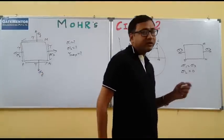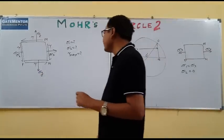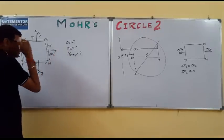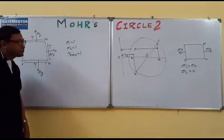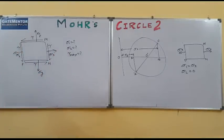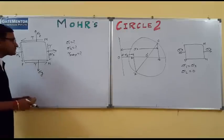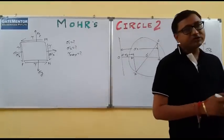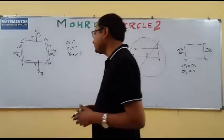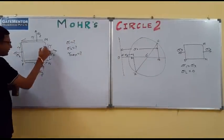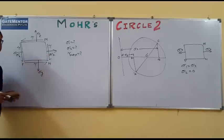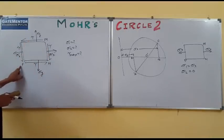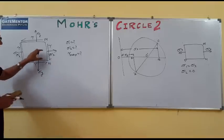By drawing the Mohr's circle we will find out the maximum and minimum principal stresses, as well as the maximum shear stress. Planes M and P are at an angle of 90 degrees to each other.